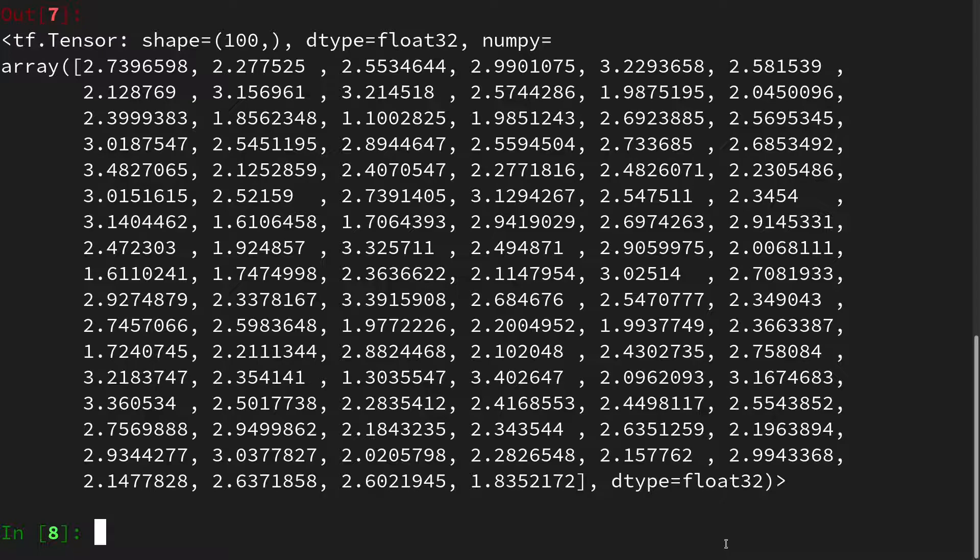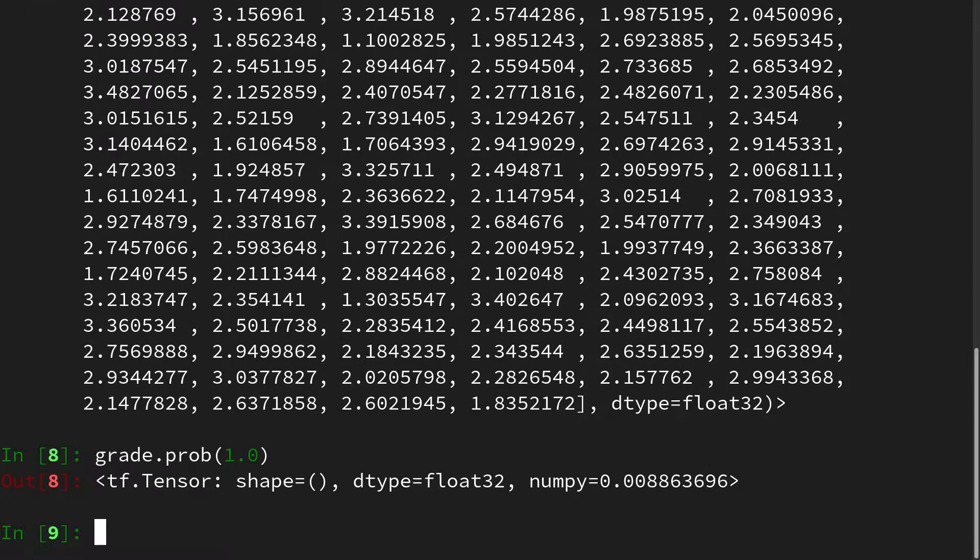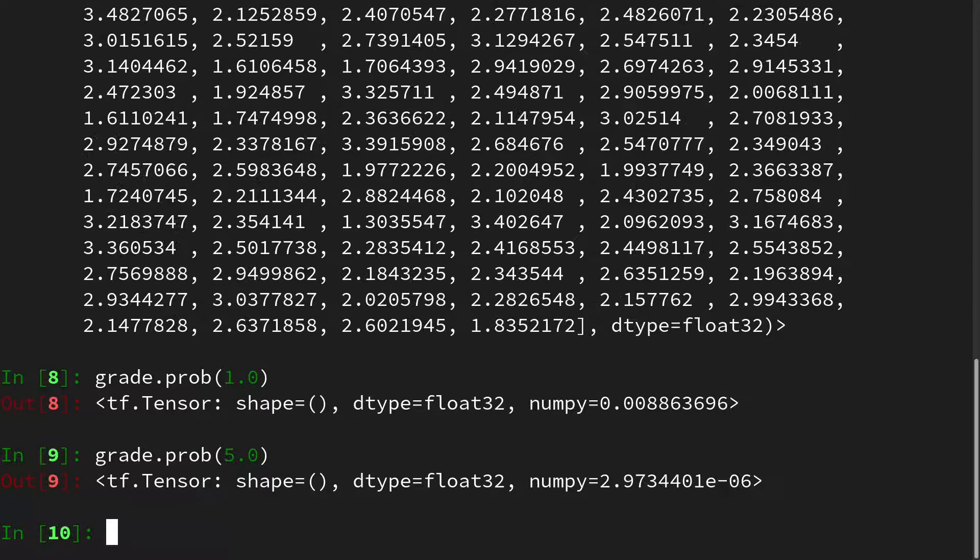And we can also check the probability of a certain grade. And for this I will use grade.probability and what is the probability that someone gets the best grade possible? And this is 0.8%. And what is the chance that someone fails the test? And here it is really unlikely.